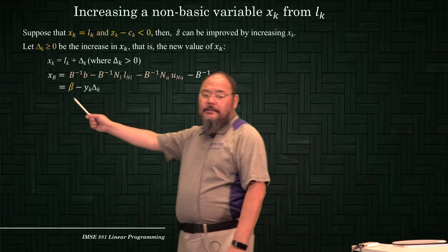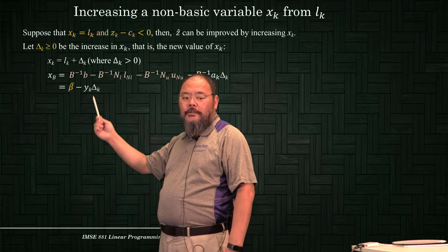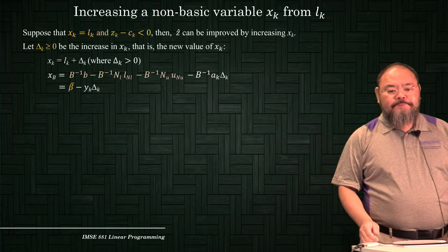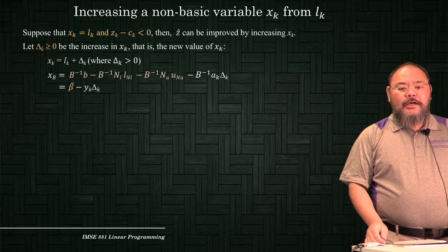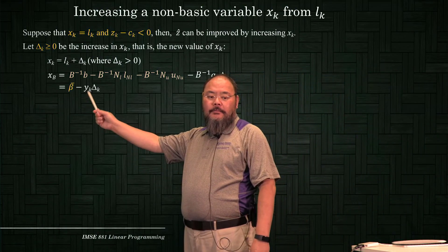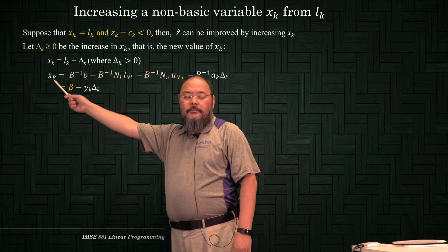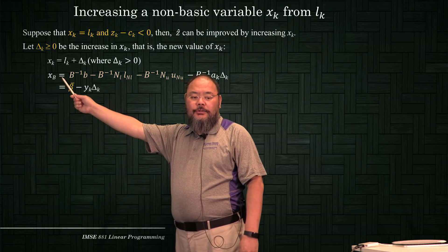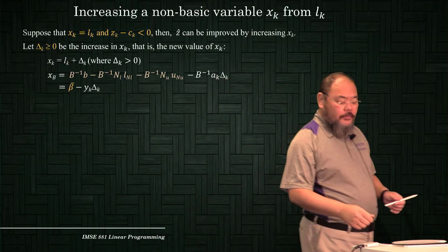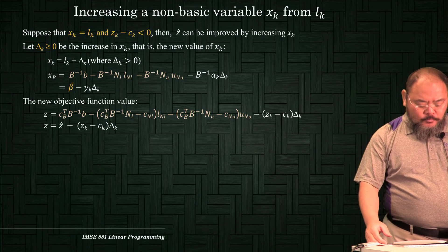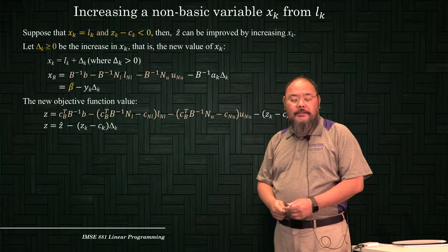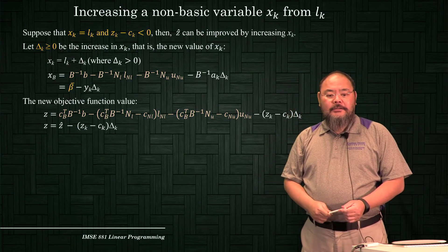Beta is the current solution, and this is the change when delta changes from zero to something positive. So we're going to see how much delta can change. It's based on yk, because we want the current xb — the current basic solution — maintained within its lower and upper bound, depending on the sign of yi_k. The new objective function value introduces delta as a positive value.